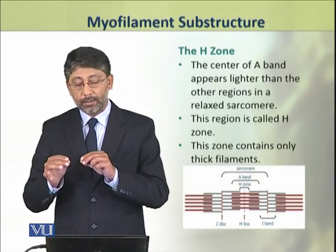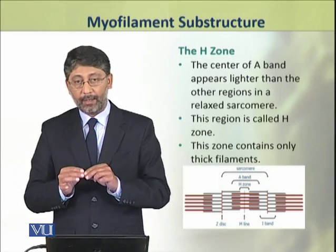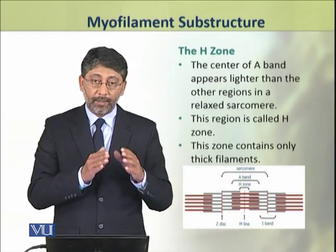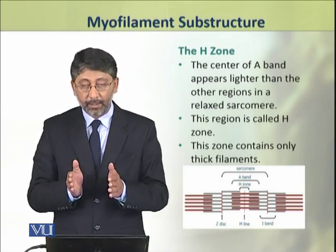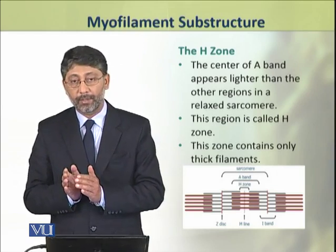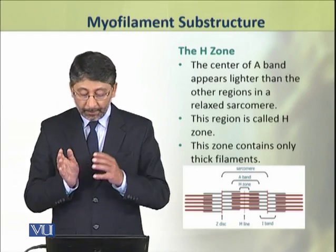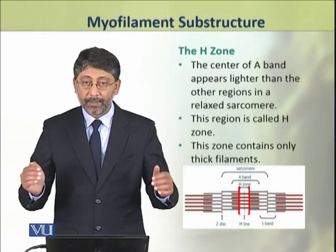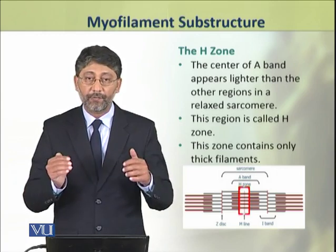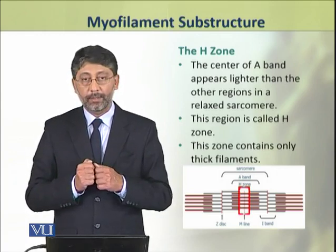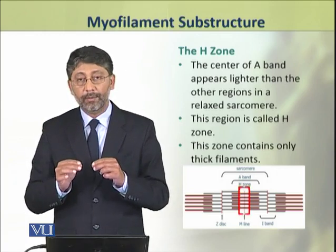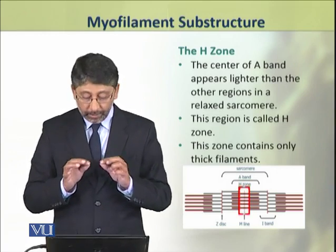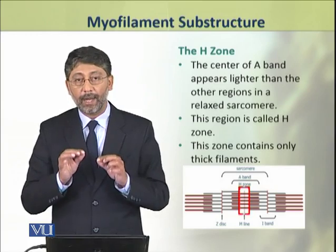In the myofilament, the central portion of the A-band is called the H-zone. This H-zone appears lighter in color than the other regions of the A-band. The H-zone is the region which contains only the thick filaments.